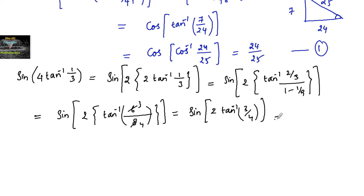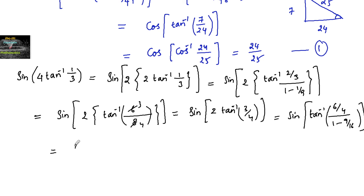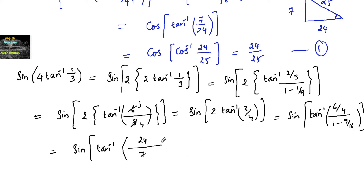Applying the formula again with x = 3/4: sin(tan⁻¹(2×(3/4)/(1−(3/4)²))) = sin(tan⁻¹((6/4)/(1−9/16))). Multiplying numerator and denominator: 24/16 divided by 7/16, which gives sin(tan⁻¹(24/7)).